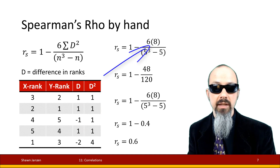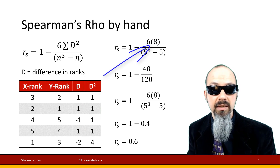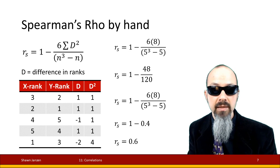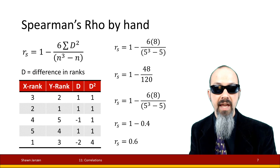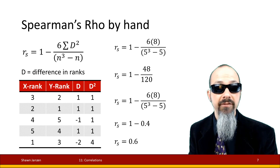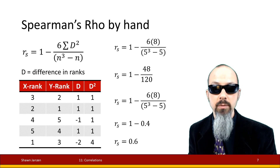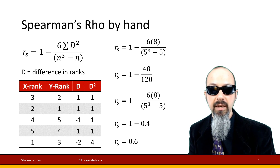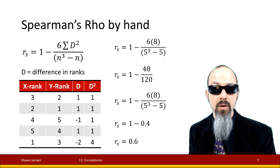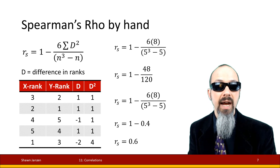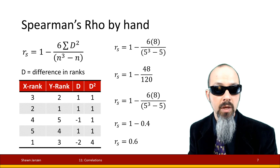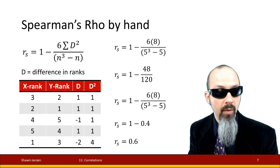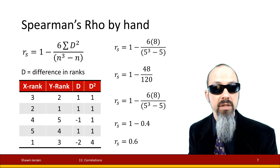When I calculate this out, in parentheses I have 8, and times 6, so my numerator comes out to 48. In the denominator, I have n cubed minus n. We had five observations, so we have 5 cubed minus 5, which comes out to 120. That division comes down to 0.4. When I take 1 minus 0.4, I see that I have a Spearman's Rho correlation of 0.6 — a positive, moderately strong correlation.